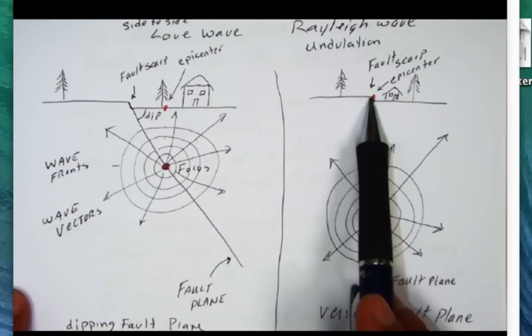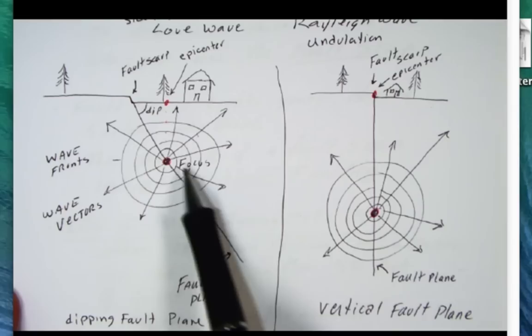The only time you'll get an epicenter to coincide with the surface trace of the fault, in this case at the fault scarp, is if you have a vertical fault. The focus is down here and you see right above it, the epicenter on Earth's surface.